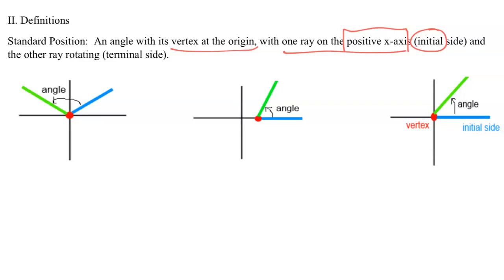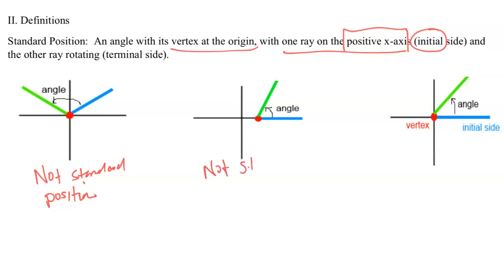Looking at these three pictures, two of them are not in standard position and one is. For the first one, the vertex is at the origin where it's supposed to be, but the initial side is not on the positive x-axis — it's floating into the first quadrant, so this is not standard position. For the second picture, the initial side is on the positive x-axis, but the vertex is not drawn at the origin, so this is also not standard position.